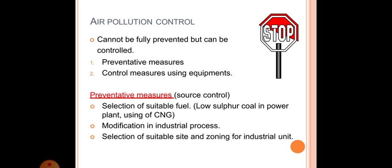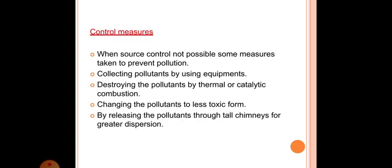Source control: selection of suitable fuel that is low sulfur coal in power plant, using of CNG, modification in industrial process, selection of suitable site and zoning for industrial unit. Control measures are when source control not possible, some measures taken to prevent pollution: collecting pollutants by using equipments, destroying the pollutants by thermal or catalytic combustion, changing the pollutants to less toxic form by releasing the pollutants through tall chimneys for greater dispersion.